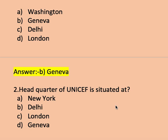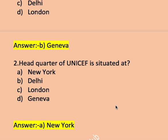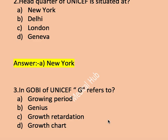Next question, question number two: the headquarter of UNICEF is situated at — option A New York, B Delhi, C London, D Geneva. Right answer is A, New York. The headquarter of UNICEF is situated in New York.